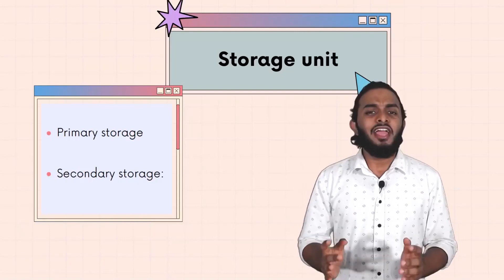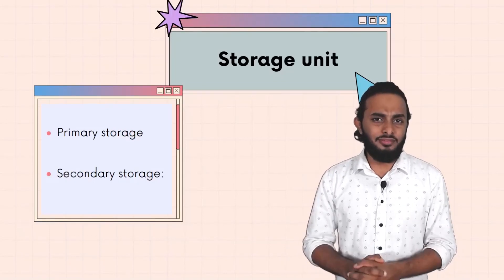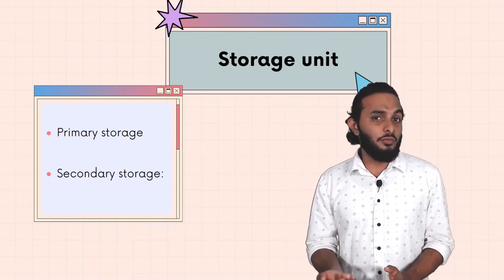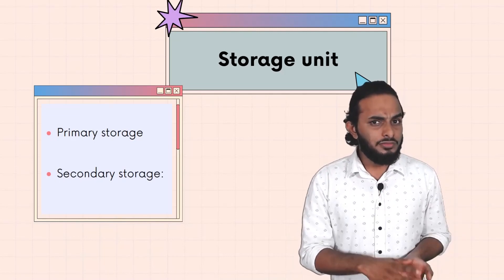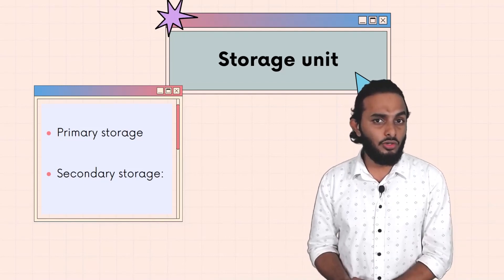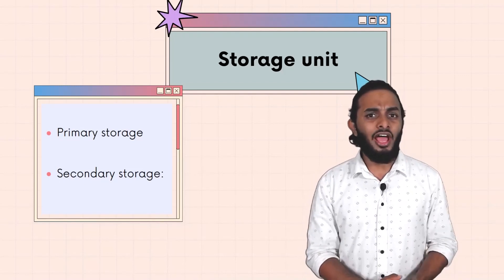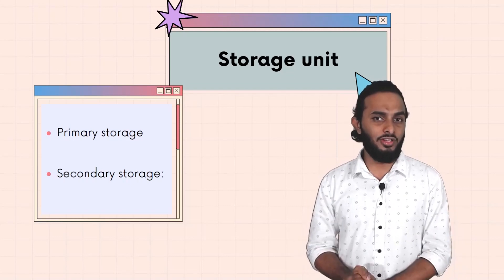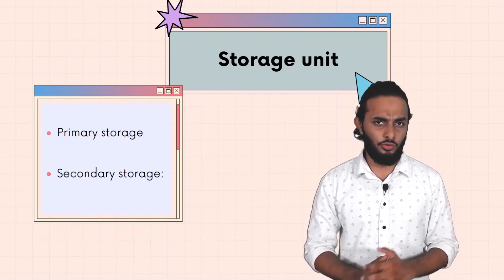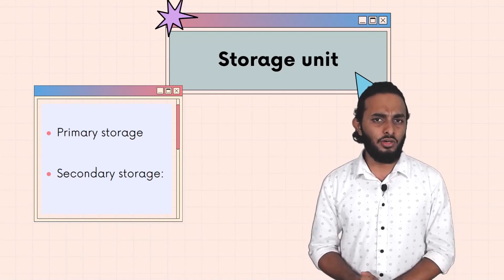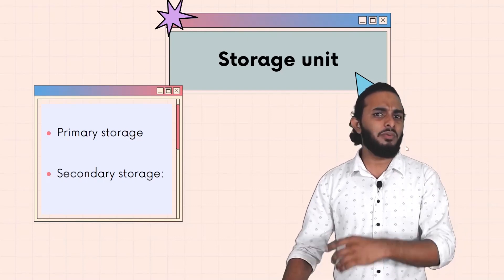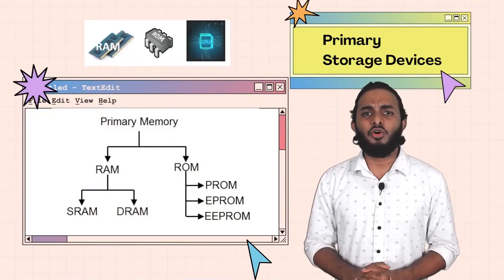So we discussed input unit and CPU in functional units. Now, what is the storage unit? We have data, we need to do the process, and we need to store that data. Storage devices are of two types: one is primary, one is secondary. Primary is main memory; secondary is auxiliary memory.